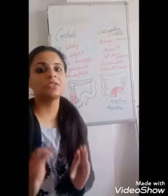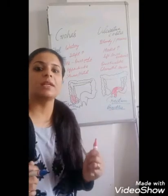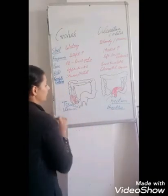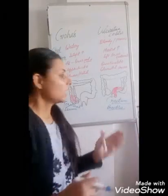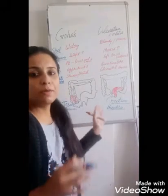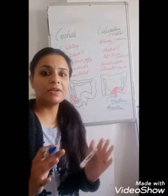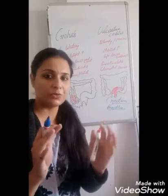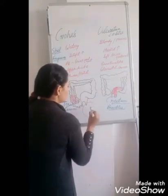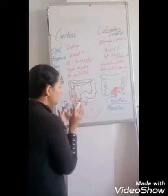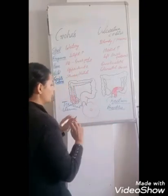In Crohn's disease, transmural inflammation can occur anywhere in the GI tract — it can involve the esophagus, jejunum, and ileum. It first affects the terminal ileum. There will be thickening of the intestine, hosepipe rigidity, leading to intestinal obstruction because the lumen of the intestine gets narrowed, causing blockage and cobblestone appearance of the intestine.